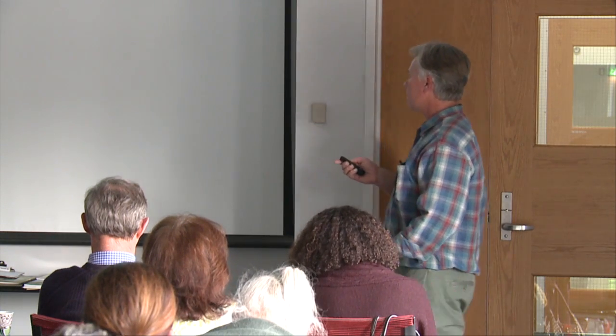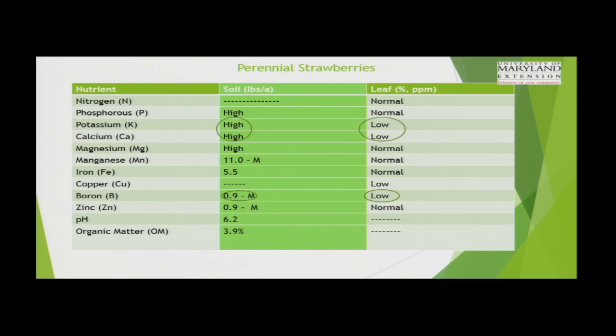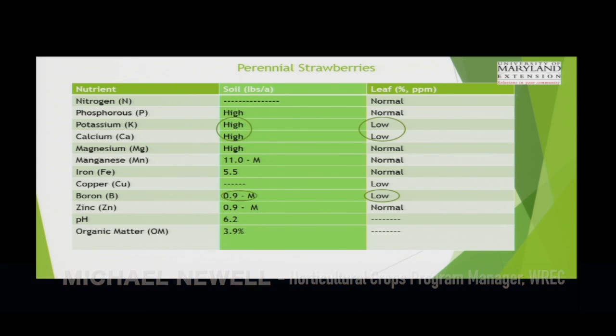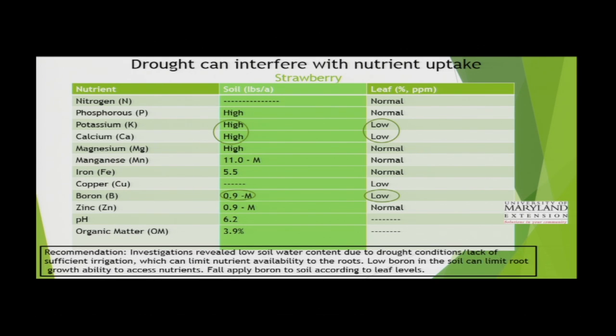Blueberry case. Everything looked fairly good on the soil side. pH was 5.2. Iron was low in the leaf, but the soil analysis says iron is high. What do we know about blueberries? What kind of pH do they like? That's exactly right — if you remember the pH availability chart, there was plenty of iron in the soil, it's just that the pH was high enough that it was limiting iron availability to the plant. Since soil levels were good and pH was too high for blueberries, making iron less available, we recommended top dressing with sulfur in the spring and fall until we can get that pH back down to 4 to 4.5. We did not recommend applying any chelated iron products to this particular crop.